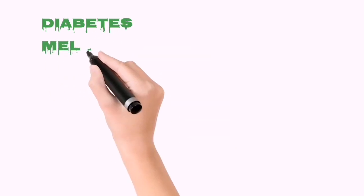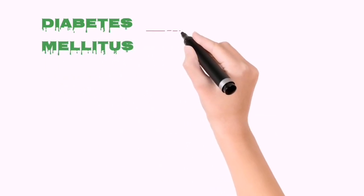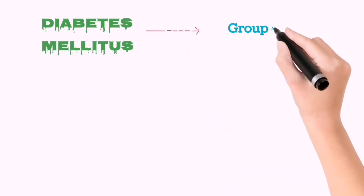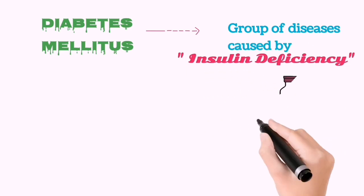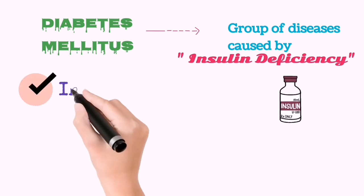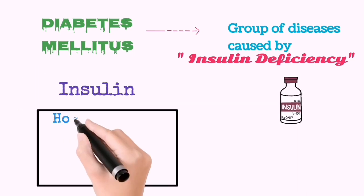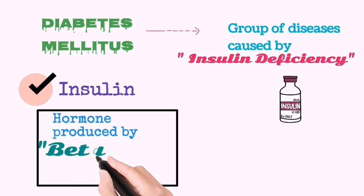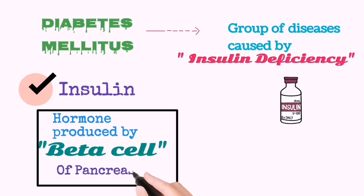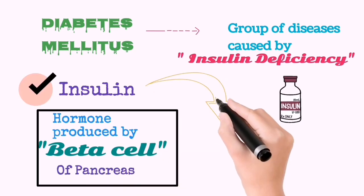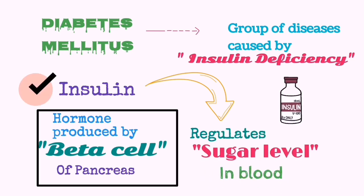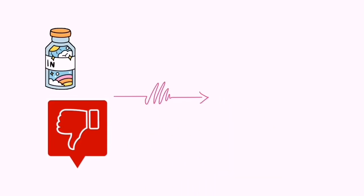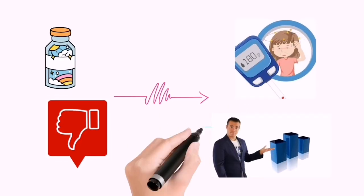What is diabetes mellitus? Diabetes mellitus is a group of diseases caused by insulin deficiency. What is insulin? Simply, insulin is a hormone produced by the beta cell of the pancreas. The main function of insulin is the regulation of the blood sugar level in blood. If the insulin level goes down, the sugar level becomes high in blood, and vice versa.